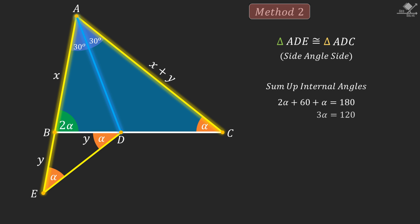From here, 3 alpha will be equal to 120 degrees. And alpha can be calculated as 40 degrees. And that will be our answer.